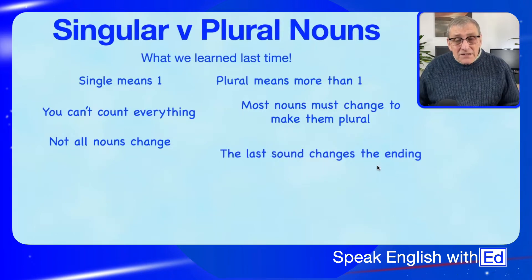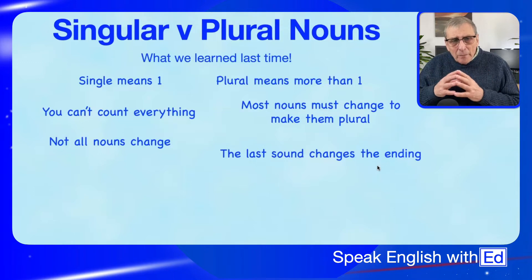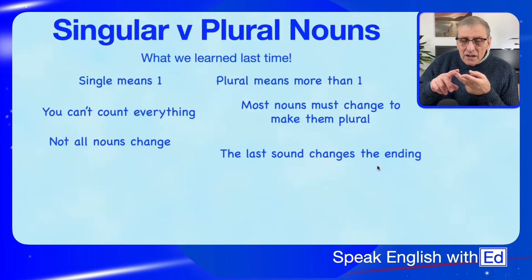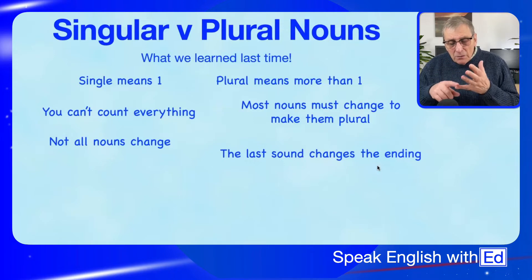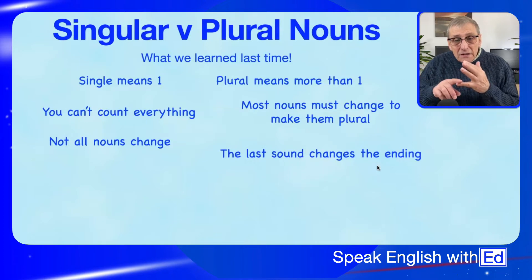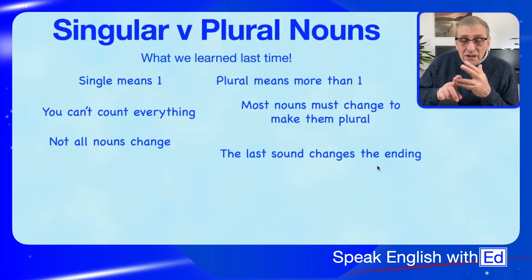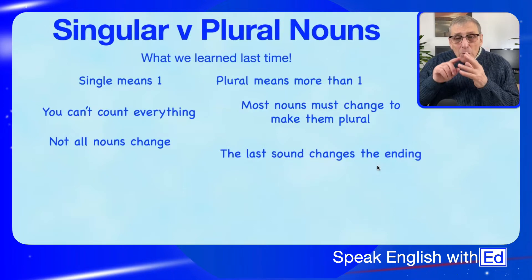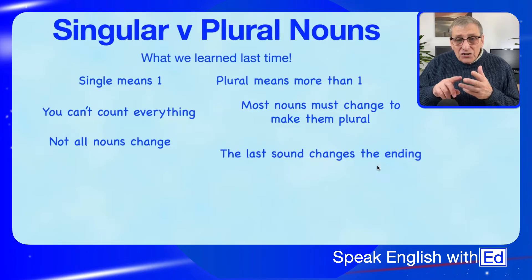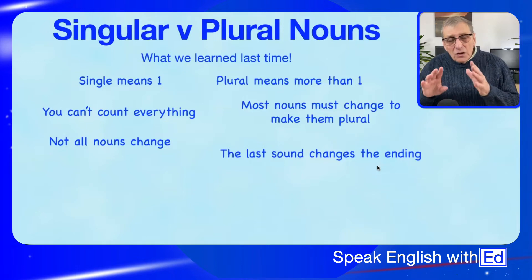We also learned it's the last sound that creates the ending — it depends on what it sounds like. There are endings like SSS, ZZZ, and EZ. So depending on the ending, you can have 'cups' — PS is easy to say. You can have 'boys' — that has a ZZZ sound. And you can have 'churches' — you can't say 'churchs,' it just doesn't work. So it depends on the ending of the noun.